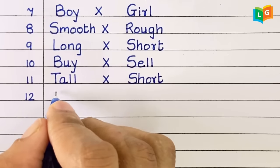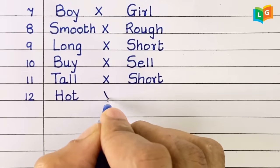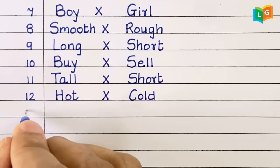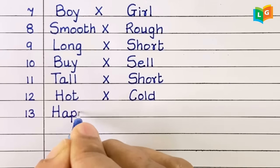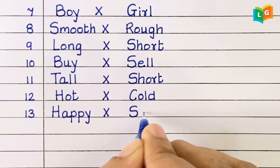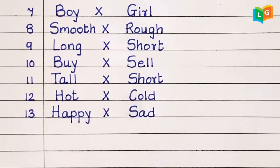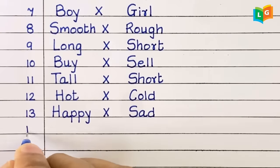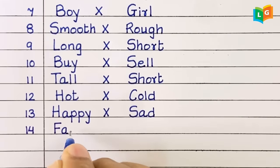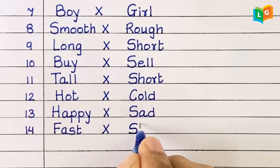Twelve, hot, cold. Thirteen, happy, sad. Fourteen, fast, slow.